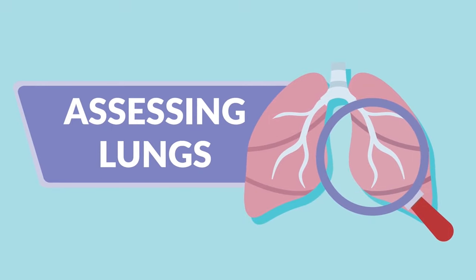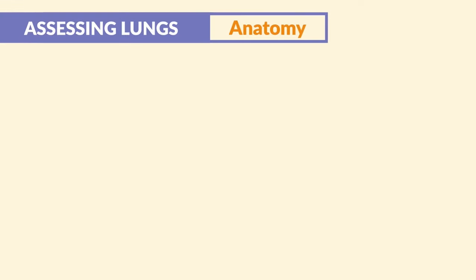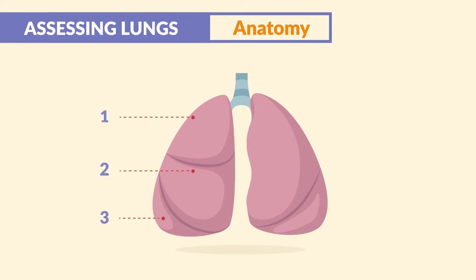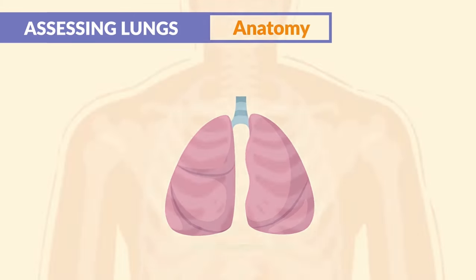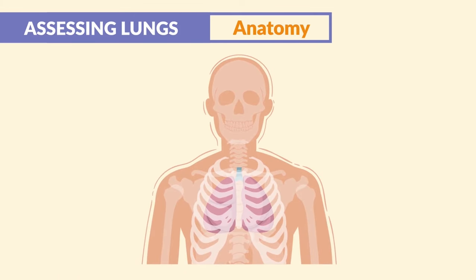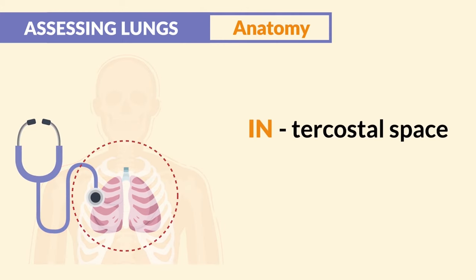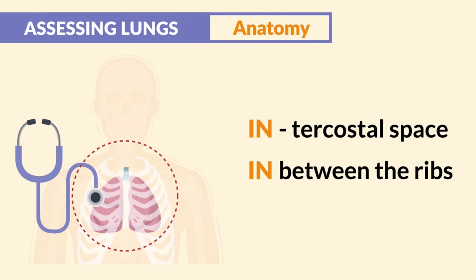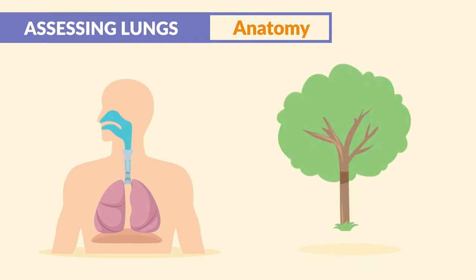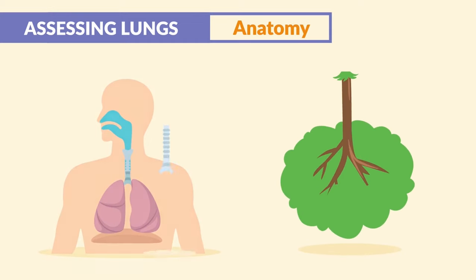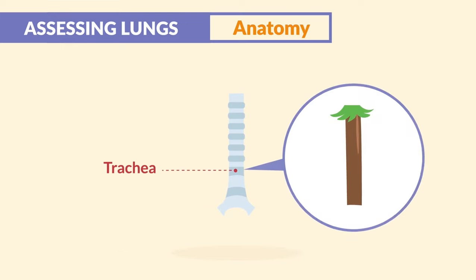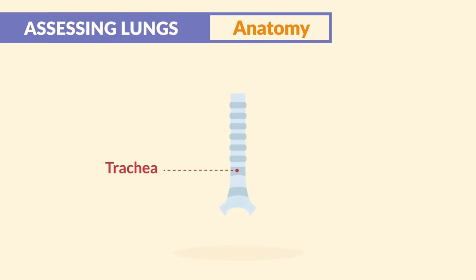For assessing the lungs, it's critical to understand the normal anatomy. The right side has three lobes and the left side only has two lobes. When listening to the lungs, we listen in between the ribs — this is called the intercostal space. The respiratory system looks like an upside-down tree, with the trachea, also called the windpipe, serving as the stump of the tree.